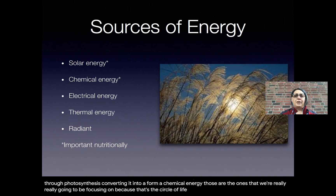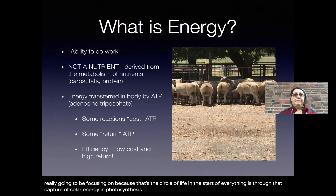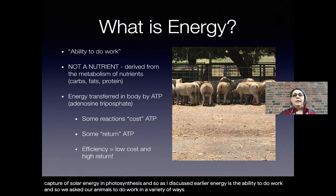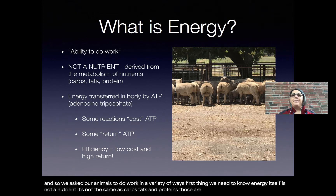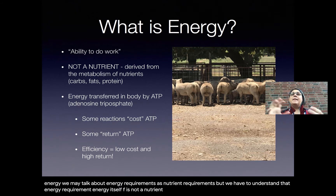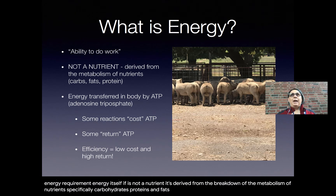The capture of solar energy through photosynthesis is the circle of life and the start of everything. Energy is the ability to do work, and we ask our animals to do work in a variety of ways. Importantly, energy itself is not a nutrient — it's not the same as carbohydrates, fats, and proteins, which are nutrients. Energy is derived from the breakdown or metabolism of those nutrients — specifically carbohydrates, proteins, and fats — in the body.